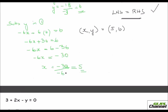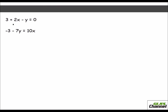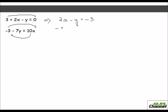Let's look at another problem. Here the equations are not in standard order, so first rewrite them with x and y terms on the left and the constant on the right. After rearranging, Equation 2 becomes minus 10x minus 7y equals 3. Notice that neither the x terms nor the y terms are equal, so we need to make them equal. I'll make the x terms equal by multiplying Equation 1 by 5.